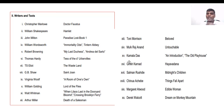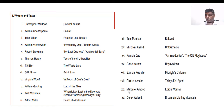Hayavadana is based on Thomas Mann's German play Transposed Heads and deals with a psychological and moral dilemma of the characters. Salman Rushdie's Midnight's Children is a famous novel about a thousand and one children born on India's Independence Day, 15th August 1947. Chinua Achebe's Things Fall Apart is a post-colonial novel about the effect of colonialism on African villages. Margaret Atwood's The Edible Woman deals with gender issues and women's inability to take decisions in their lives. Derek Walcott's Dream on Monkey Mountain is also an important post-colonial work.